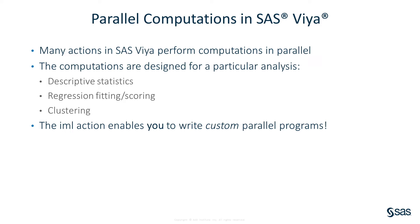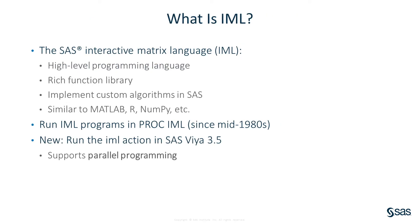The IML action is different because it enables you to write a custom parallel program. It supports functions that enable you to distribute a computation across multiple nodes and threads. IML is the interactive matrix language — a high-level programming language that enables you to use matrices and vectors to implement custom algorithms. Traditionally, SAS programmers use PROC IML to write analyses not otherwise available in SAS procedures. The IML action supports the IML language in SAS Viya and adds ways to distribute tasks to many threads, supporting parallel programming.